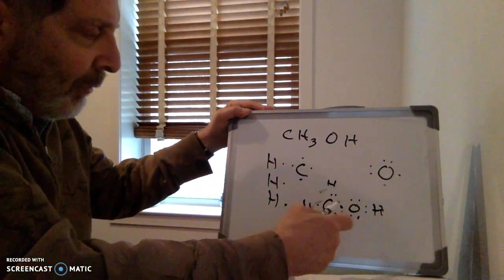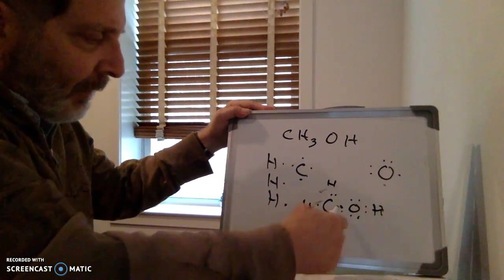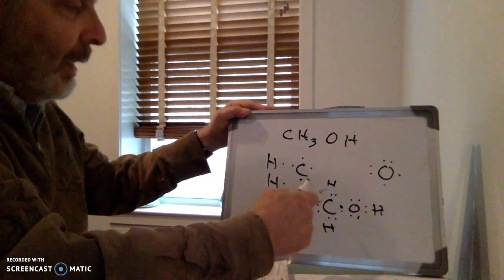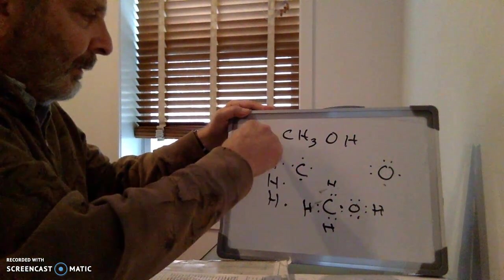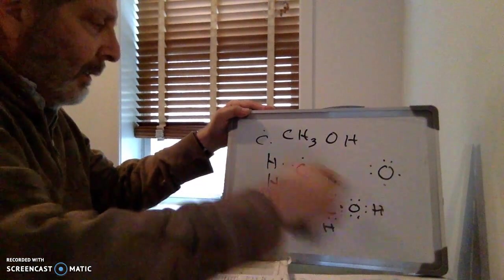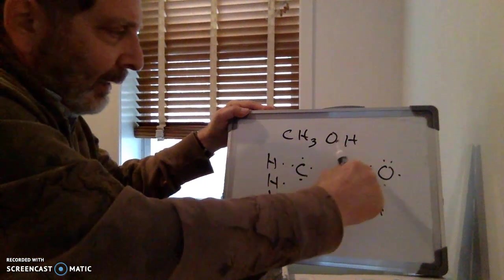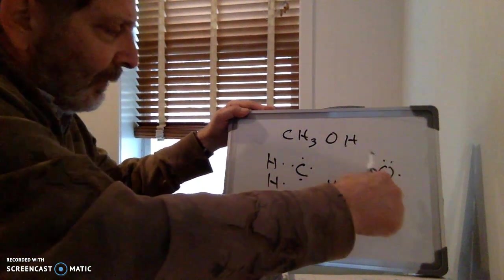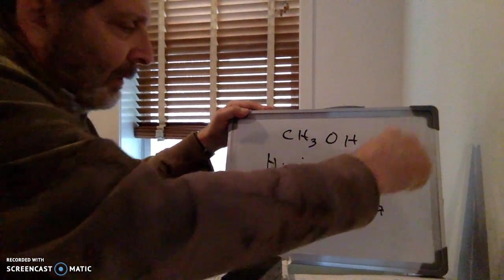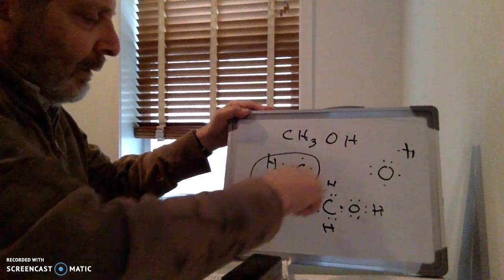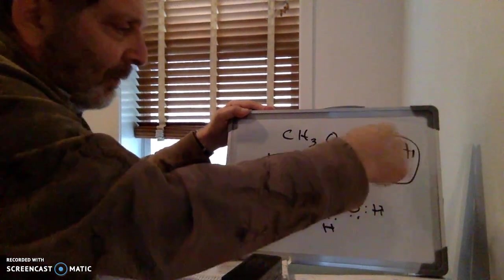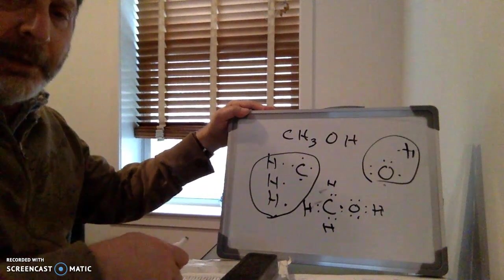And if you add up all the electrons, you've got two, four, six, eight, ten, twelve, fourteen. And fourteen here. And here you've got four, five, six, seven, eight, nine, ten, eleven, twelve, thirteen, and fourteen electrons. So you've got these electrons here and these electrons all line up. And that's methanol, which is actually one carbon short of ethanol.